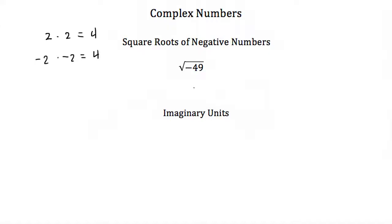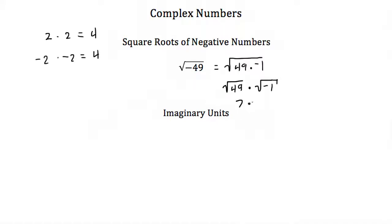So what happens if you try to take the square root of a negative number? Well if I have the square root of negative 49, I can rewrite this as the square root of 49 times negative 1. And if I can rewrite it that way, that means I can also rewrite this as the square root of 49 times the square root of negative 1. Well I can take the square root of 49 — that's just 7. So this would be 7 times the square root of negative 1. Now I still can't take the square root of negative 1 — again it's a negative number, that wouldn't make any sense.